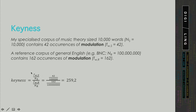And this is calculated as follows: the relative frequency in a specialised corpus divided by the relative frequency in a large corpus will give you a score or a value. And if this value is larger than 1, then the word can be considered a keyword in the specialised corpus. The larger this value is, the better — the more specific the word in question is.